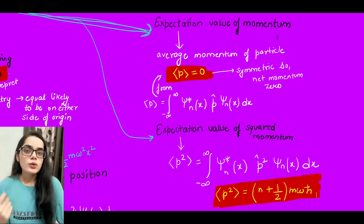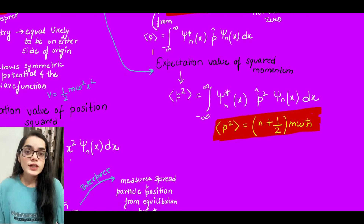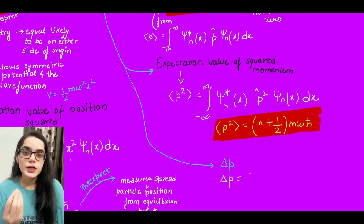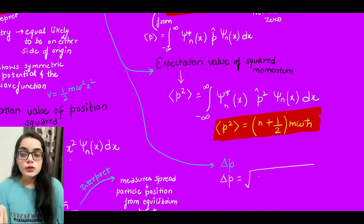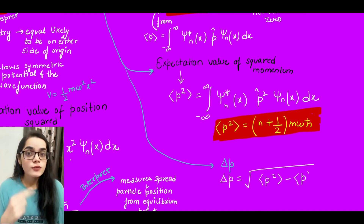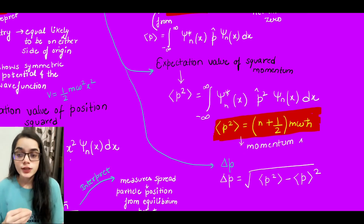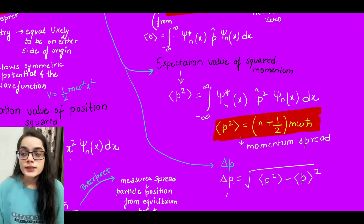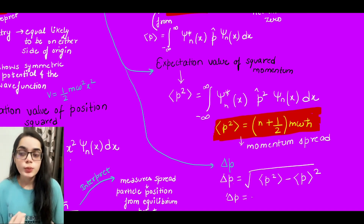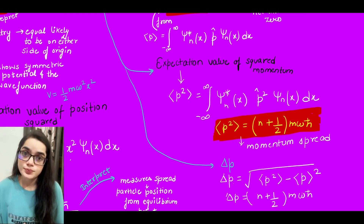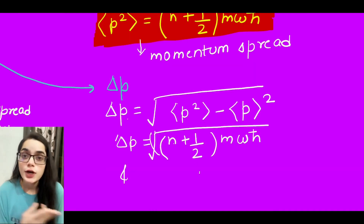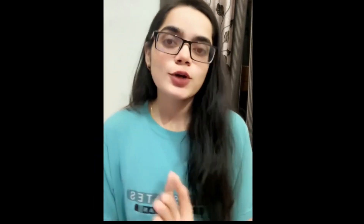We calculate Δp similarly to how we calculated Δx. Using Heisenberg's uncertainty principle, we take Δx · Δp and find that we cannot calculate position and momentum simultaneously with precision. For n = 0 (ground state), we get Δx · Δp = ℏ/2, showing that even at the ground state the particle's position and momentum are not zero — they cannot both be zero at the same time. This is all about harmonic oscillators.